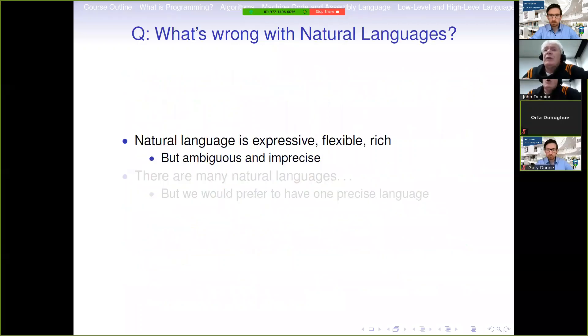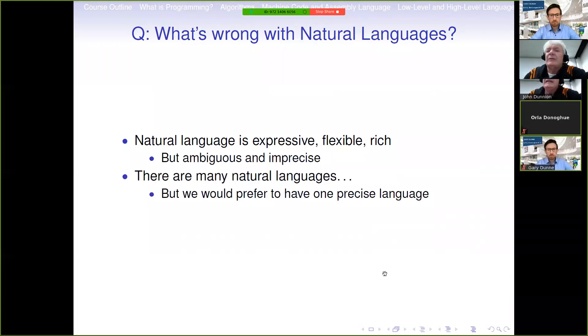So you might ask, well, why do we need a programming language? What's wrong with natural languages? We use natural languages all the time and we can usually make ourselves understood, whatever about the accent, but usually we can get the concepts across. So what's wrong with natural languages? Natural language is expressive, flexible and rich, but it's also ambiguous and it's imprecise. There are also many natural languages, but we would prefer to have one precise language that everybody could use to share the concepts that we have in programming.